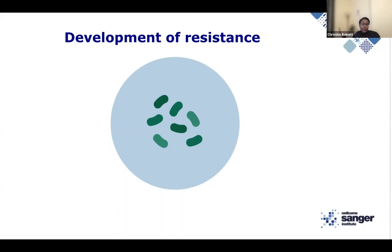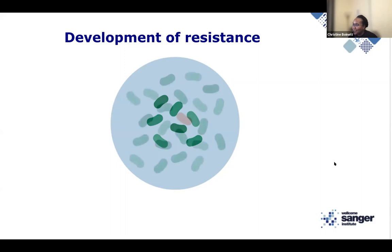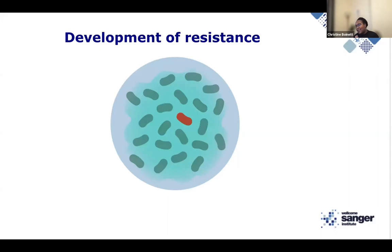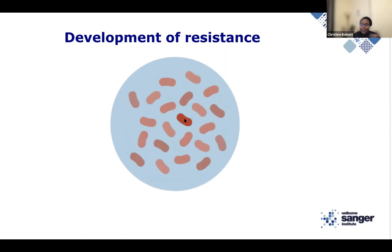I'll show a short animation. A bacterium was growing happily, acquired a random mutation before any drug was introduced — completely harmless, so it kept it. When an antibiotic like ciprofloxacin comes along, it kills everything except the one with the advantageous mutation. That one survives and then starts to multiply exponentially, resulting in a fully drug-resistant population from just one random resistant cell.